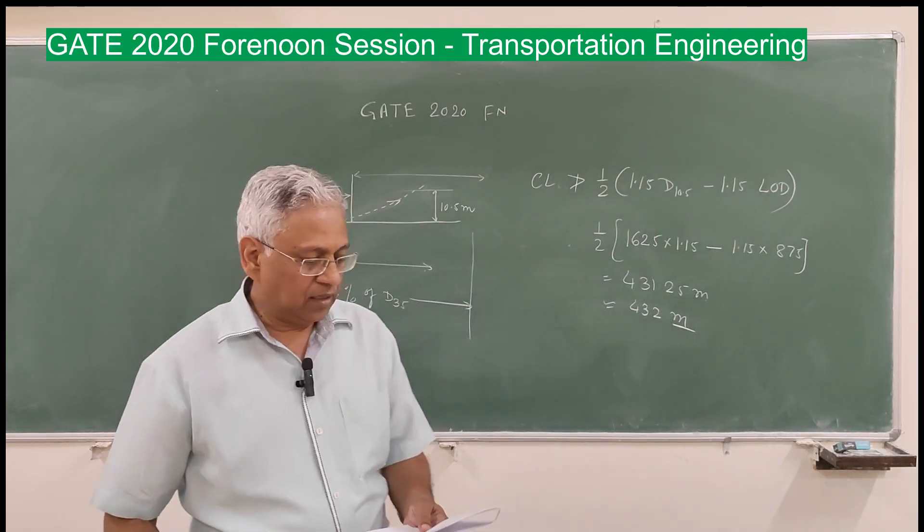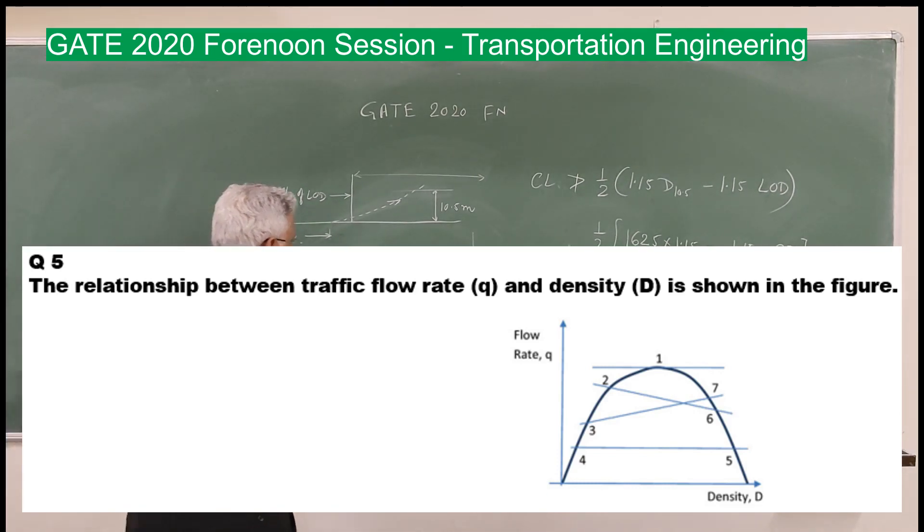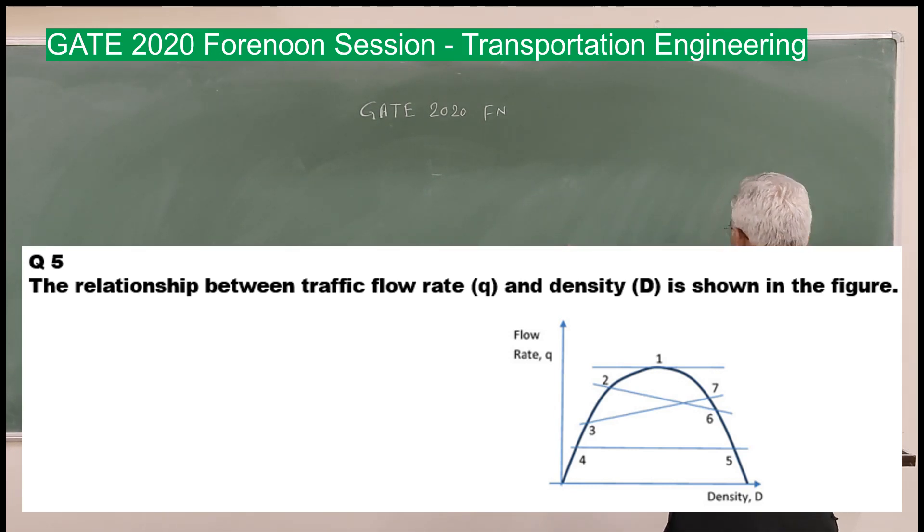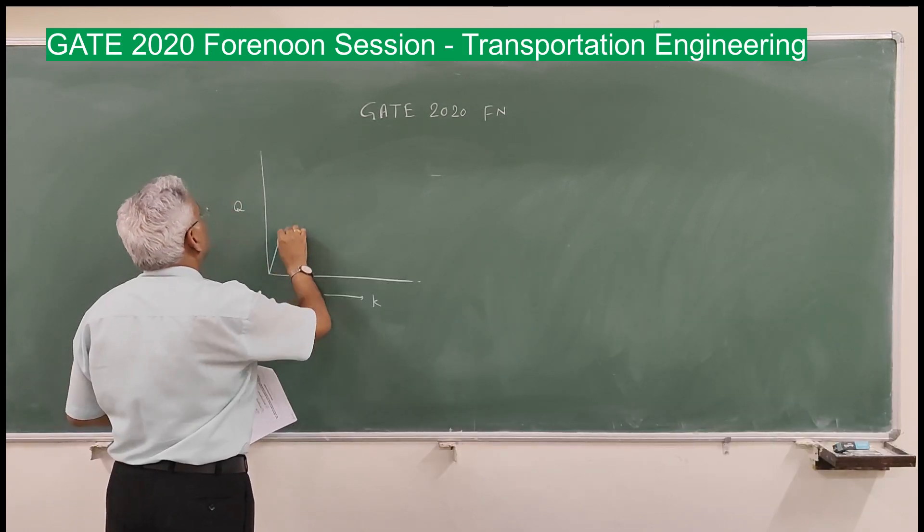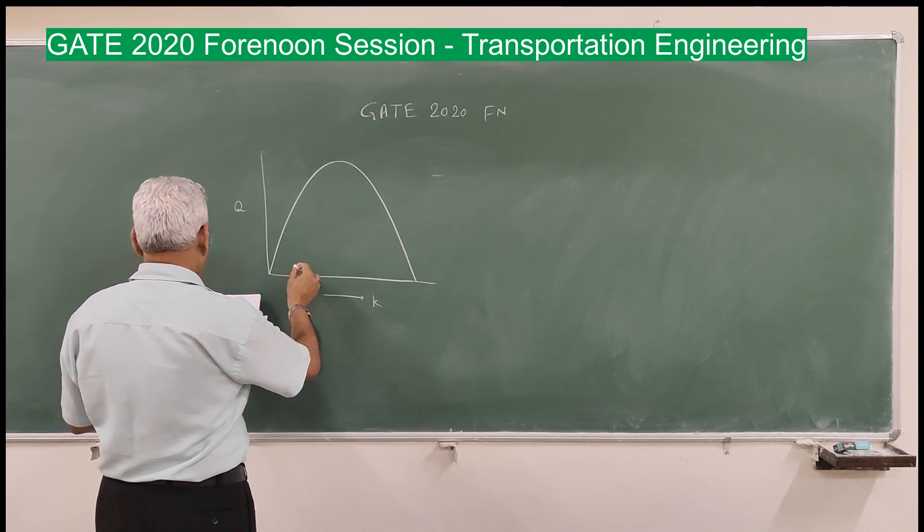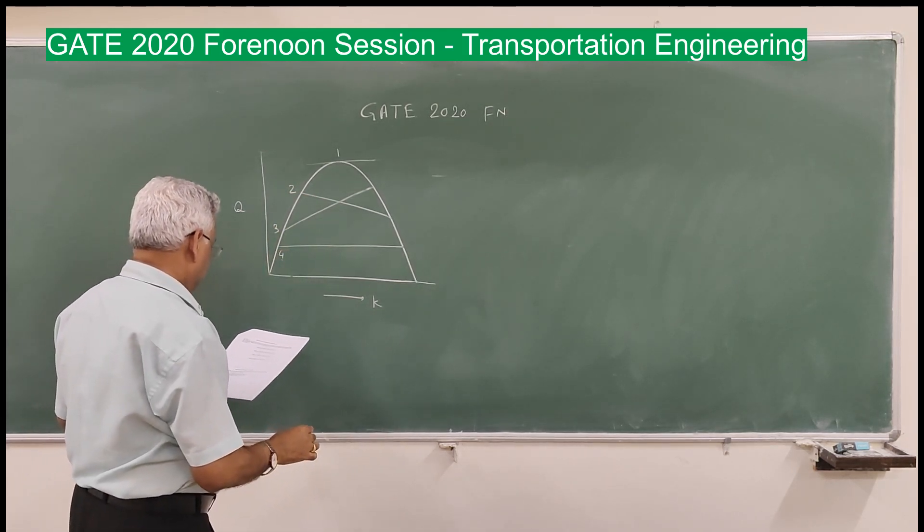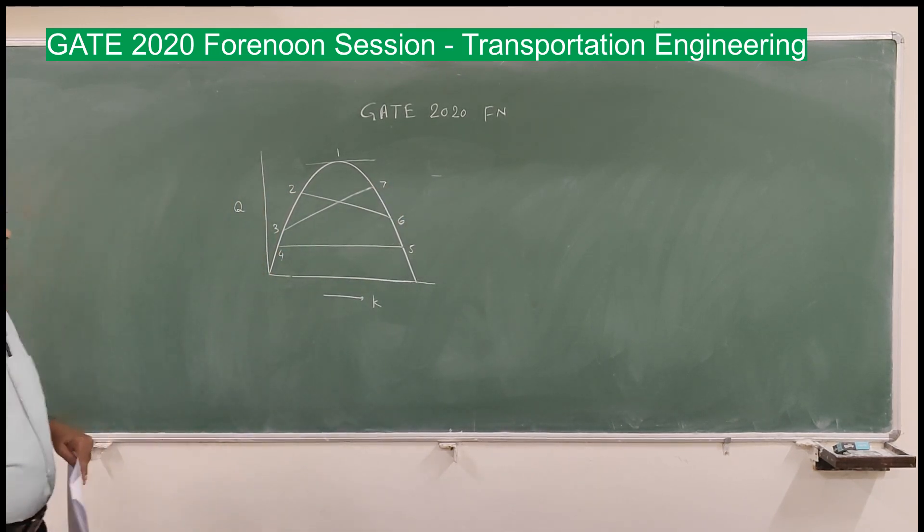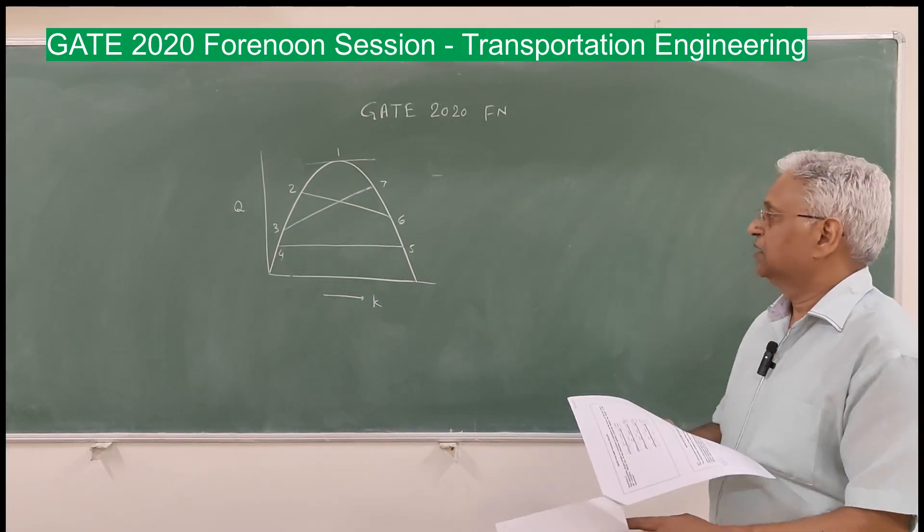Next question is: The relationship between traffic flow rate Q and density is shown in the figure. This is a very typical question and I do not think it is a correct question, but I will explain to you how this kind of problem can be solved. That is the speed, that is the flow and density curve. This is parabolic. Here there are four lines drawn: one, two, three, four, and five, six and seven. The question is, the shock wave condition is depicted by which line? There are four options.